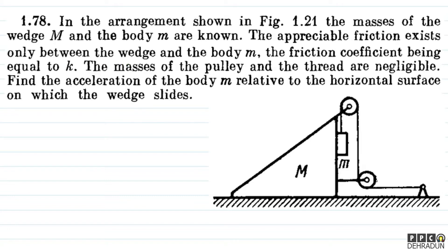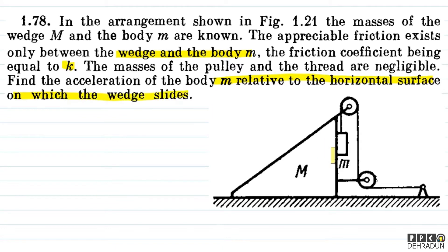The question says: in the arrangement shown in figure 1.21, the masses of the wedge M and body small m are known. The appreciable friction exists only between the wedge and the body small m, the friction coefficient being equal to k. The masses of the pulley and the thread are negligible. Find the acceleration of the body small m relative to the horizontal surface on which the wedge slides.